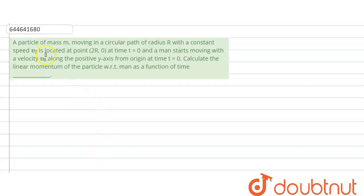In this question, a particle of mass m is moving in a circular path of radius r at a constant speed v2, located at point (2r, 0) at t=0. A man starts moving with velocity v₀ along the positive y-direction from the origin at t=0.